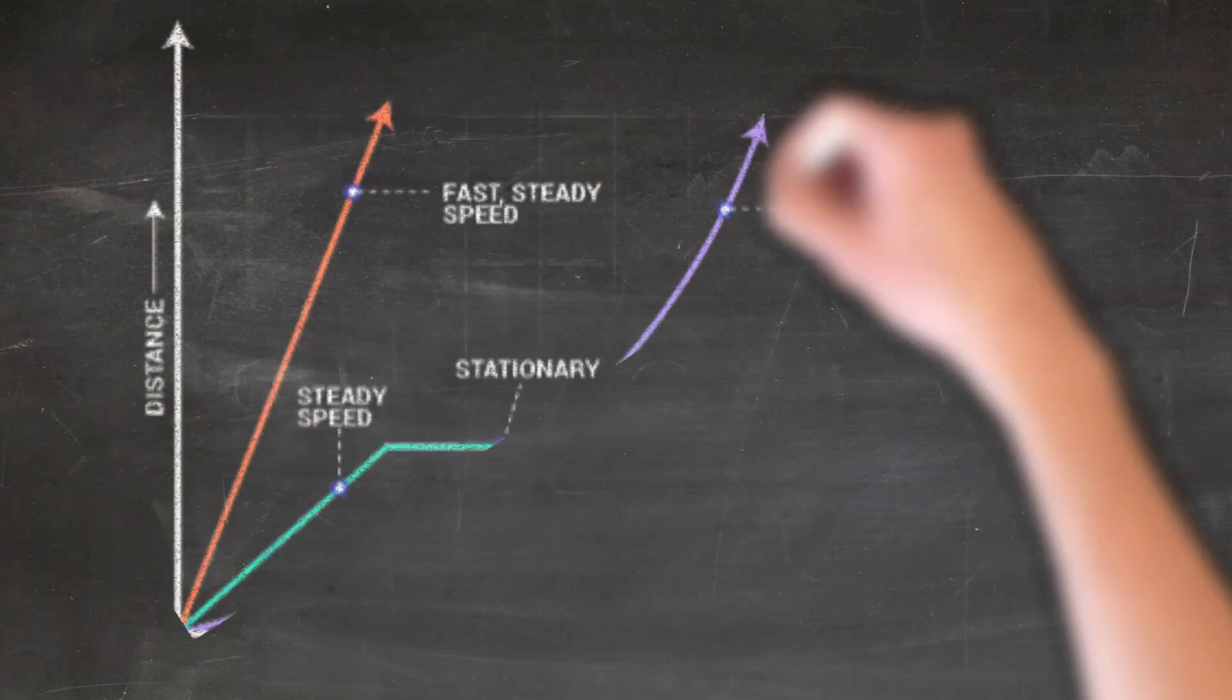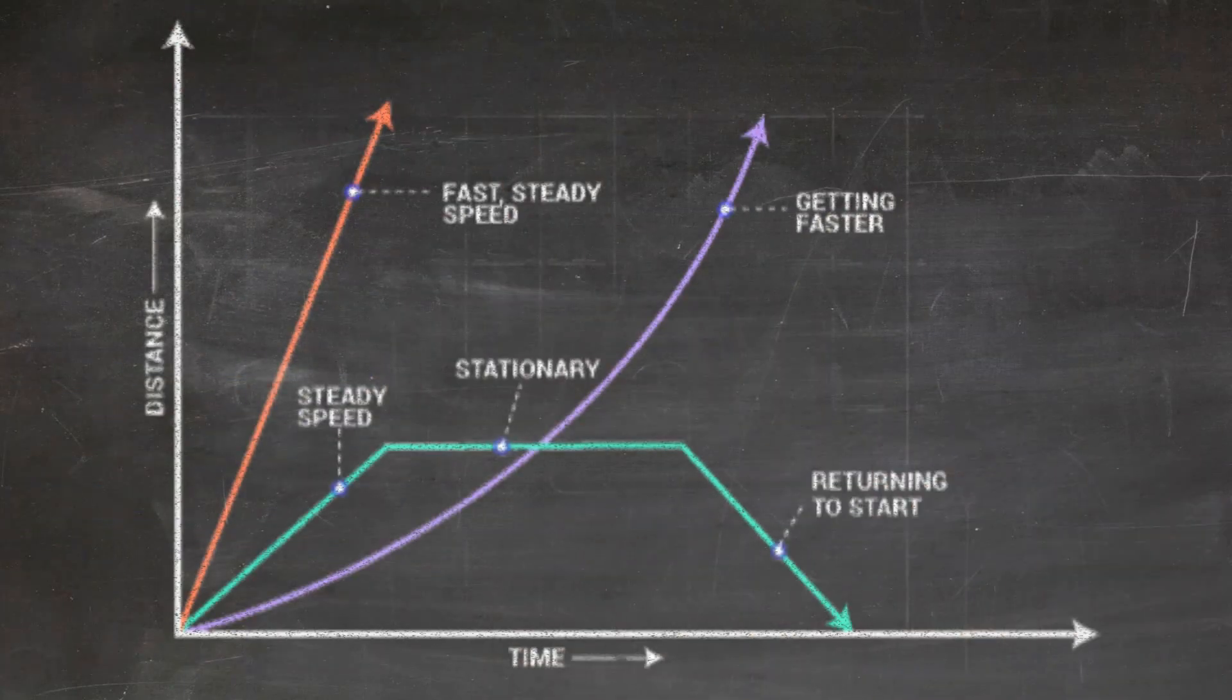This last graph is a good graph that wraps everything together. We see a straight line in the red line that represents a fast, steady, or constant speed. It's a constant speed because it is a straight line. The purple line we see is a curved line pointed up, which means that the object is getting faster or that the object is speeding up. So this is not moving at a constant speed.